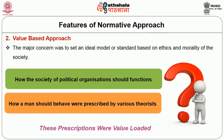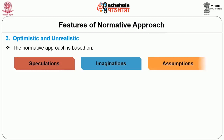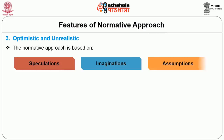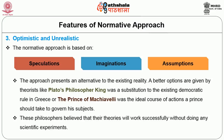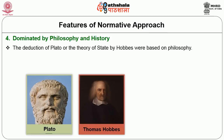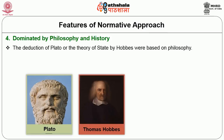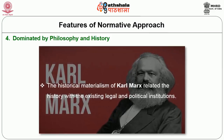The normative approach is also based on speculations or assumptions. It presents an alternative to the existing reality — better options are given by theorists like Plato by virtue of his philosopher king, which was a substitution to the existing democratic rule in Greece. Or the Prince of Machiavelli was the ideal course of action a prince should take to govern his subjects. These philosophers believed their theories would work successfully without scientific experiments. The normative approach studies institutions like state, government or the origin of state, making political inquiry to suggest better options. The historical materialism of Karl Marx related history with existing legal and political institutions.